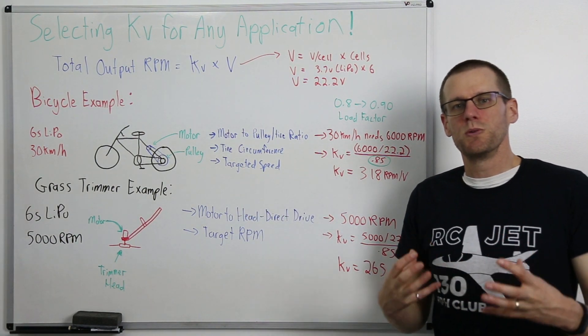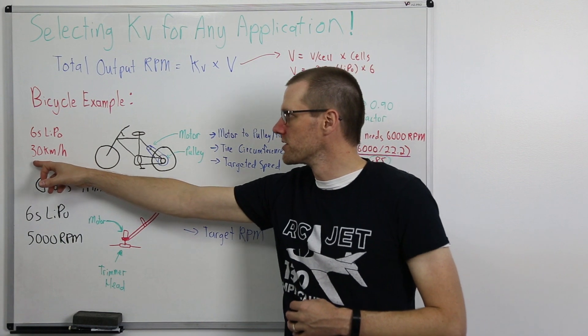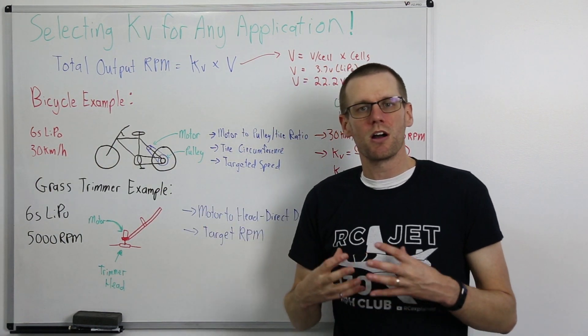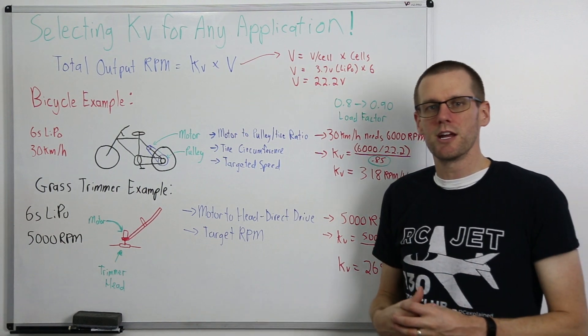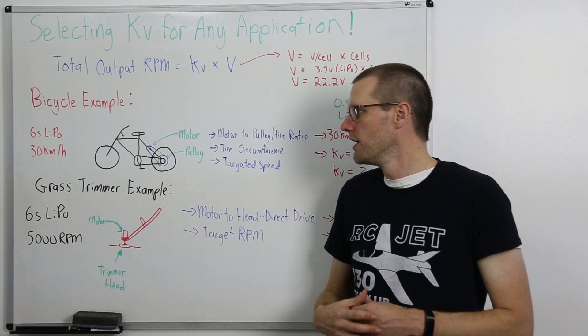So the target speed is something that you have to establish. In our bicycle example we're going to talk about 30 kilometers per hour being a good target for us and I think that's relatively reasonably fair.